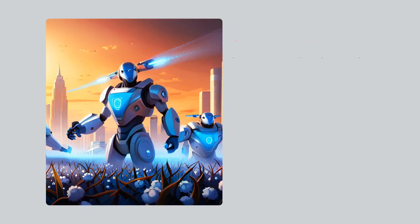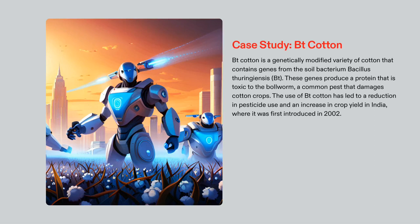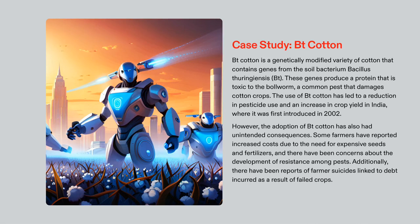Genetic engineering has revolutionized agricultural practices, particularly with the development of Bt cotton. This genetically modified variety of cotton contains genes from the soil bacterium Bacillus thuringiensis, producing a protein that is toxic to the bollworm, a common pest, allowing farmers to reduce their usage of harmful pesticides and thus increasing crop yields. Since its introduction in India in 2002, Bt cotton has had a profound impact on the country's agricultural industry, providing economic benefits but also having some unintended consequences, including higher costs of seed and fertilizers and the potential for the development of resistance. Cases of farmer suicide have been linked to increased costs and lack of access to traditional agricultural knowledge. These cases illustrate the importance of taking into account potential implications of genetic engineering, and ethical principles must be applied to ensure its safe and responsible implementation.